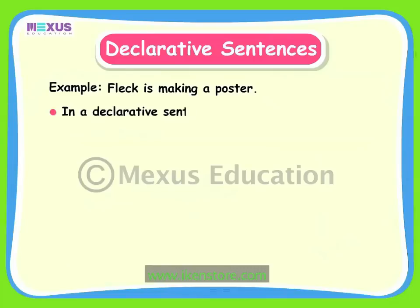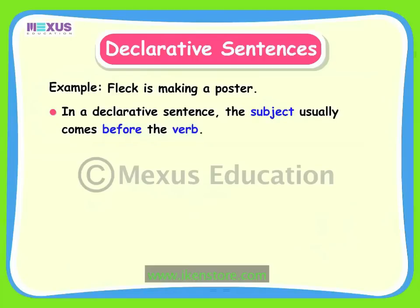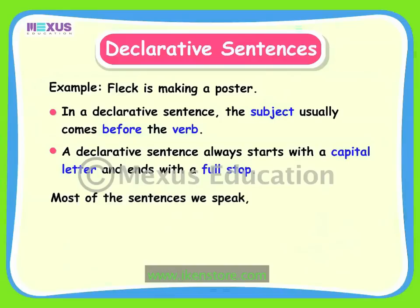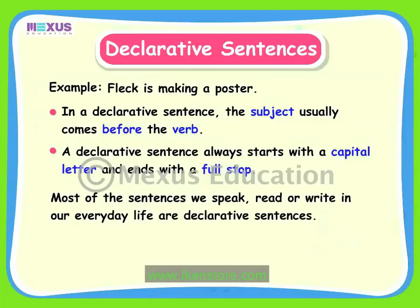In a declarative sentence, the subject usually comes before the verb. In the example used here, the subject Fleck is used before the verb is making. A declarative sentence always starts with a capital letter and ends with a full stop. The sentence starts with a capital letter F and ends with a full stop. Most of the sentences we speak, read or write in our everyday life are declarative sentences.